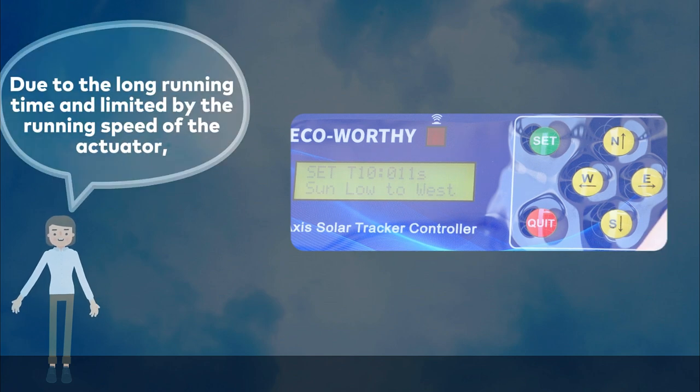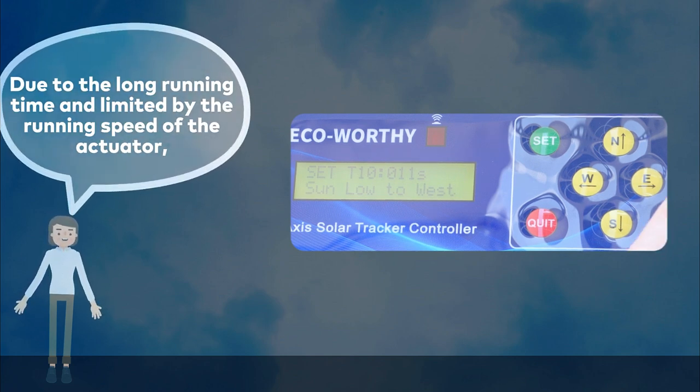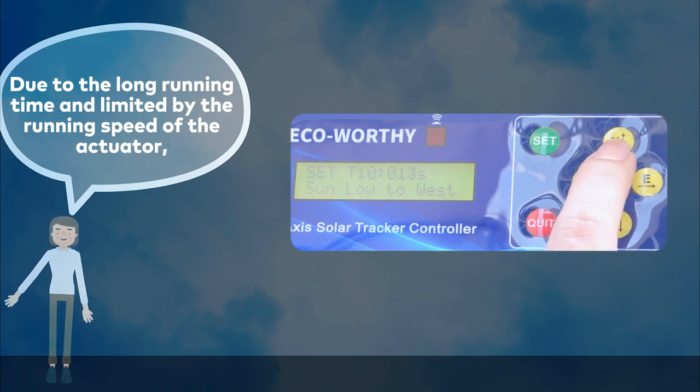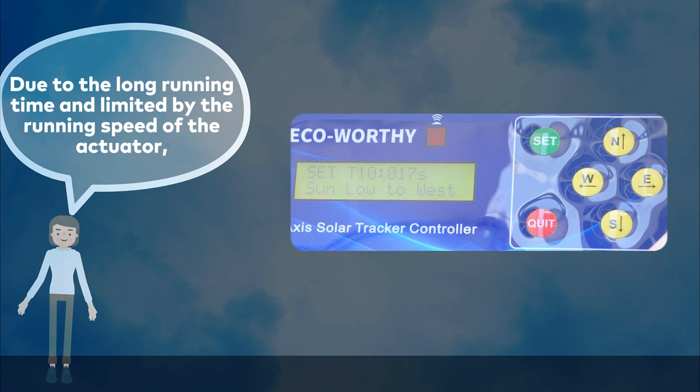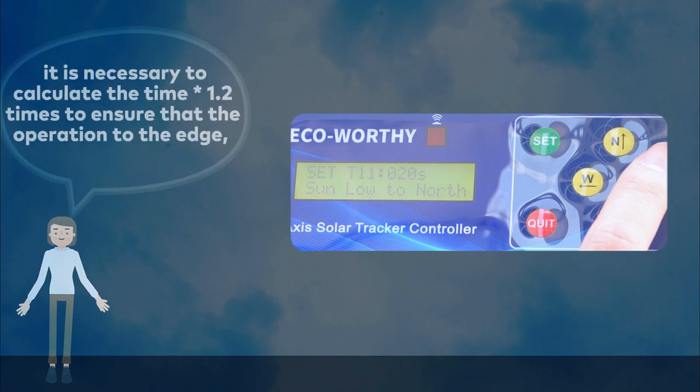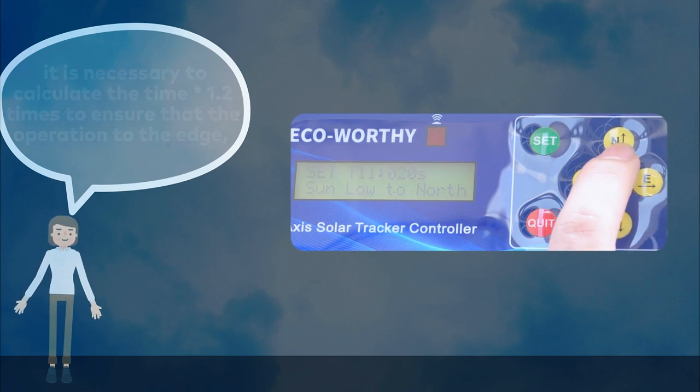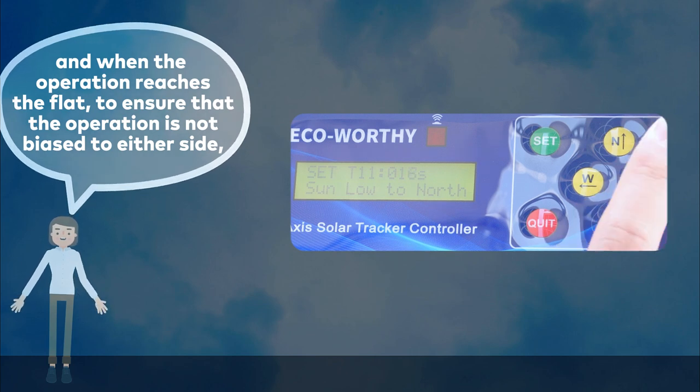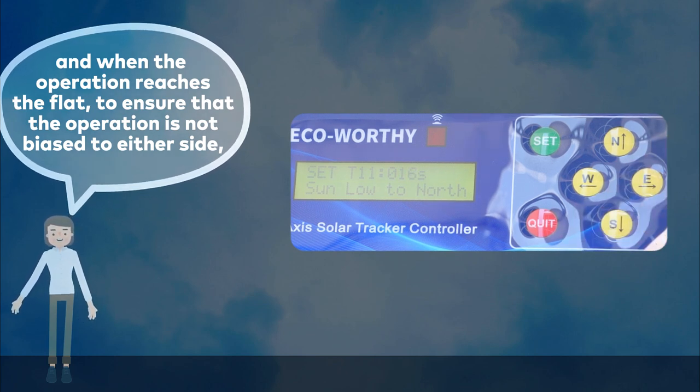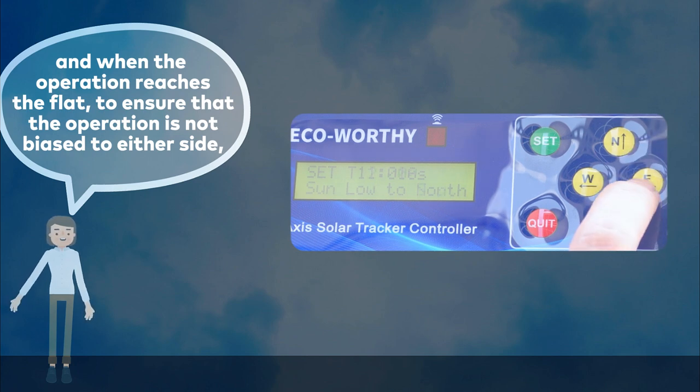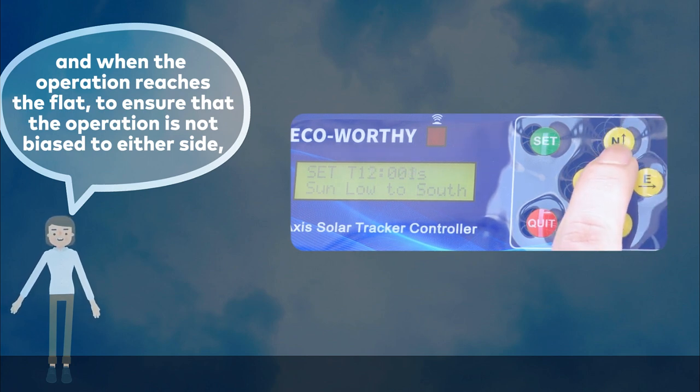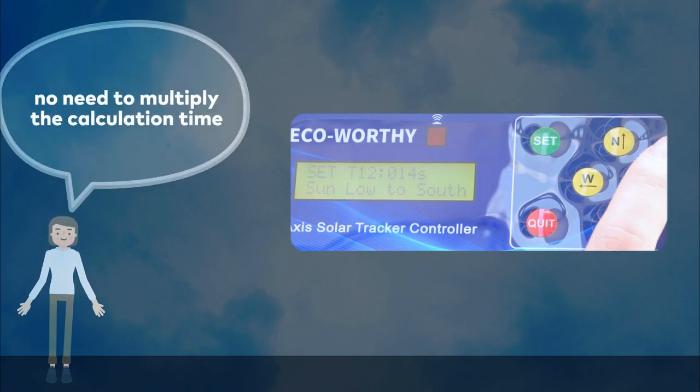Due to the long running time and limited by the running speed of the actuator, it is necessary to calculate the time 1.2 times to ensure that the operation reaches the edge, and when the operation reaches the flat position, ensure that the operation is not biased. No need to multiply the calculation time for T12.